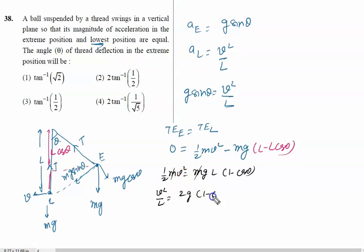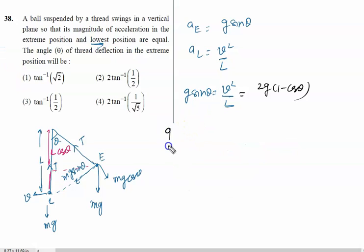Put this value here, it is 2g (1 minus cos theta). Now further we will solve it. We will write g sin theta can be written as 2 sin(theta/2) cos(theta/2) equal to 2g. Then 1 minus cos theta, we all know very well cos 2 theta is 1 minus 2 sin squared theta.